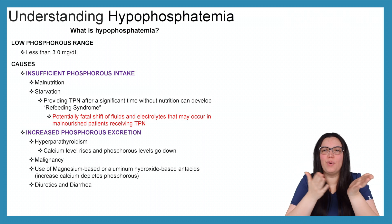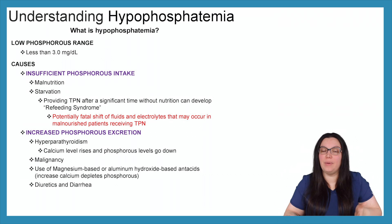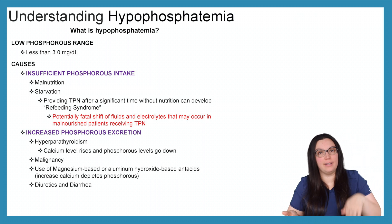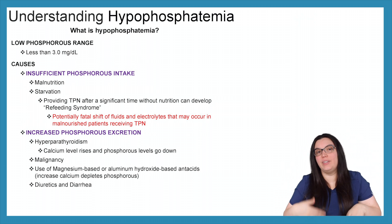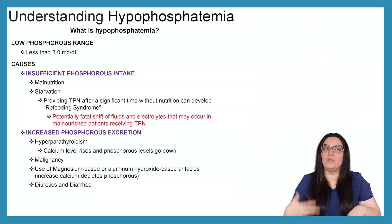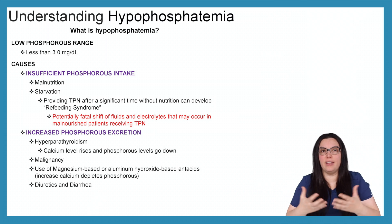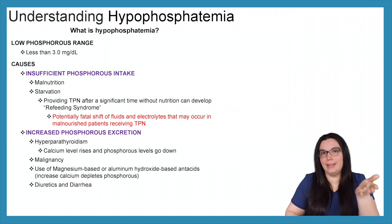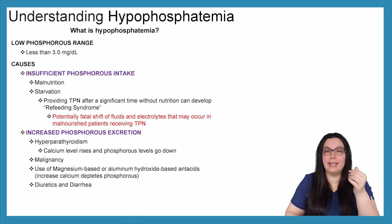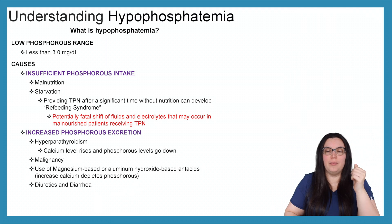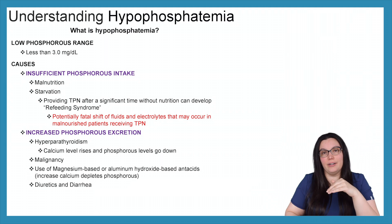So what is hypophosphatemia? Hypo means low. Phosphatemia means phosphorus in the blood. So we're going to have a low phosphorus in the blood, and you're going to see lab values less than 3.0 milligrams per deciliter.